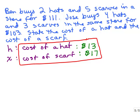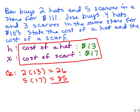Remember, H and X are not part of the problem. You're the one who just called the cost of a hat H. So the cost of a hat is $13, the cost of a scarf is $17. Now let's check and make sure that's true. Originally it said Ben bought two hats and five scarves. Two hats, how much did he pay for a hat? $13. So he paid $26 for the hats. What else did he buy? Five scarves. Each scarf was $17, so he paid $85 for the scarves, so he paid $111. And yes, that checks out for Ben.